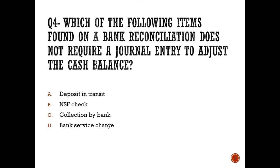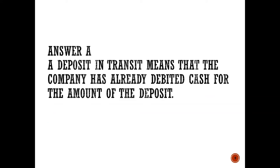Question number four: Which of the following items found on the bank reconciliation does not require a journal entry to adjust the cash balance? A, deposit in transit; B, NSF check; C, collection by the bank; or D, bank service charge. The answer is A — deposit in transit — because it appears on the bank side, not the book side. Items on the bank side do not require journal entries by the company; only book-side items require adjustment entries.